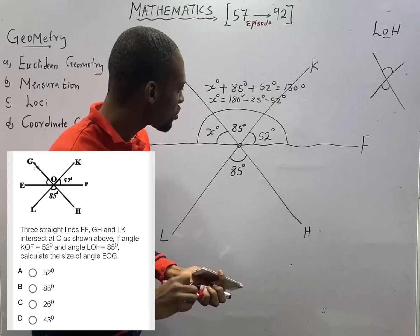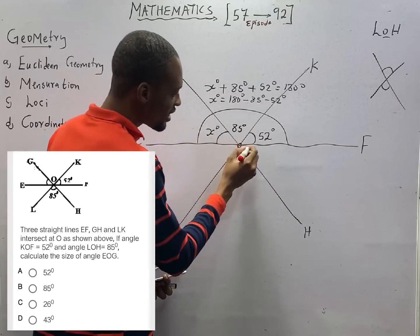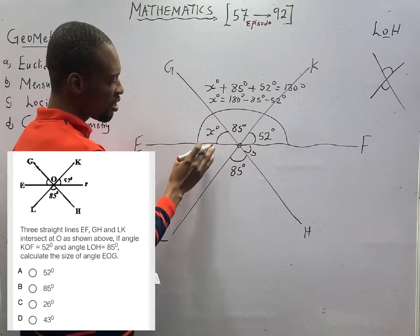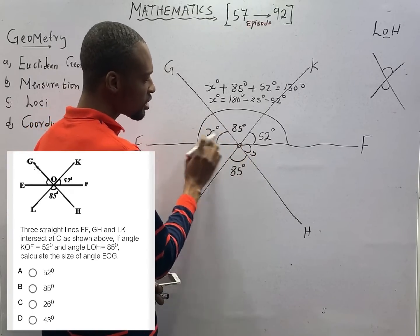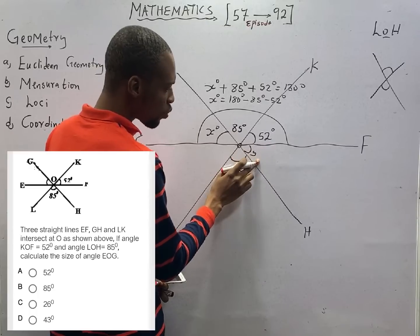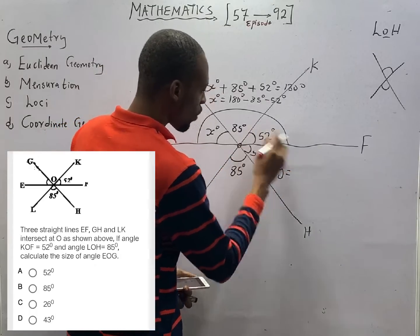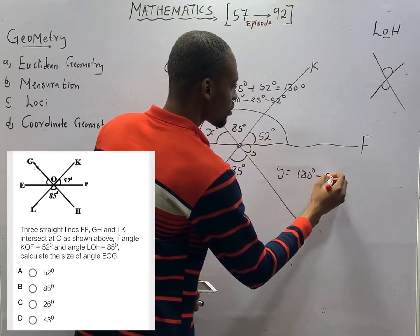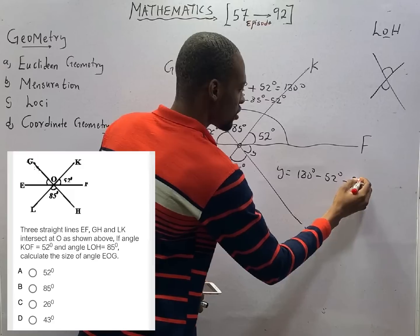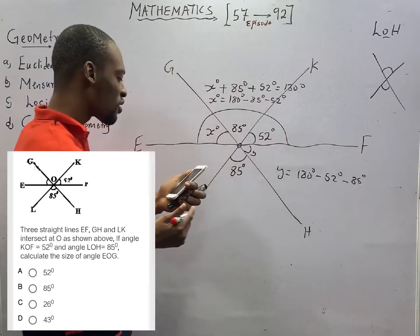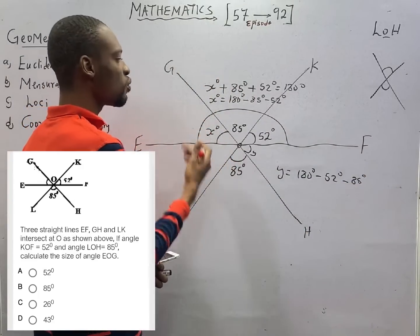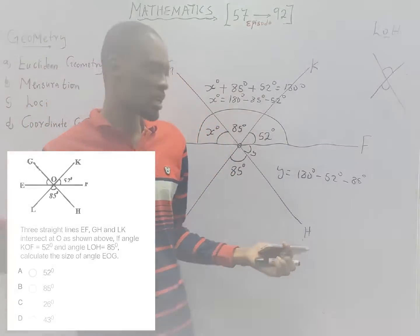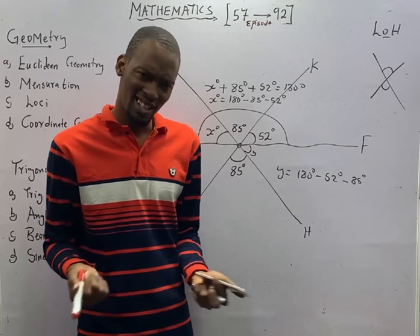Using another method: S and the angle on the other side, let's call it Y, are vertically opposite. Y equals 180 minus 52 minus 85, so Y is also 43 degrees. Since S and Y are vertically opposite, S is also 43 degrees. That is vertically opposite angles — a very interesting question.